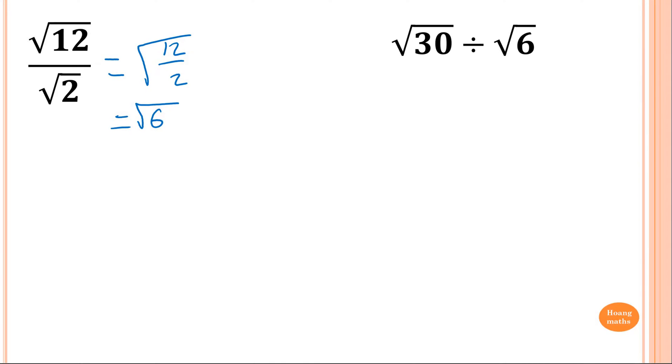Next one here. Square root of 30 divided by square root of 6, which is 30 over 6. So just go 30 divided by 6 if you like. You can even write it like that. And then 30 divided by 6 is 5. So your answer is square root of 5.